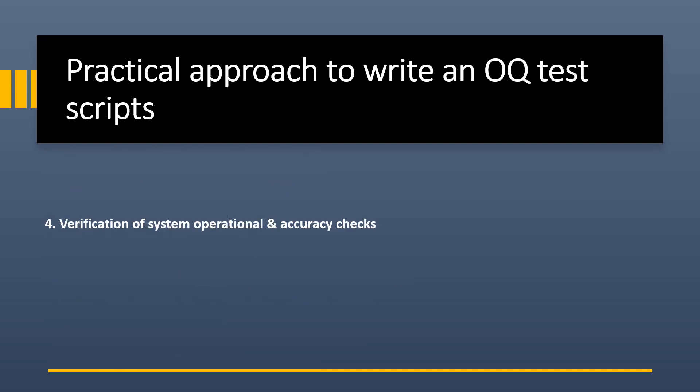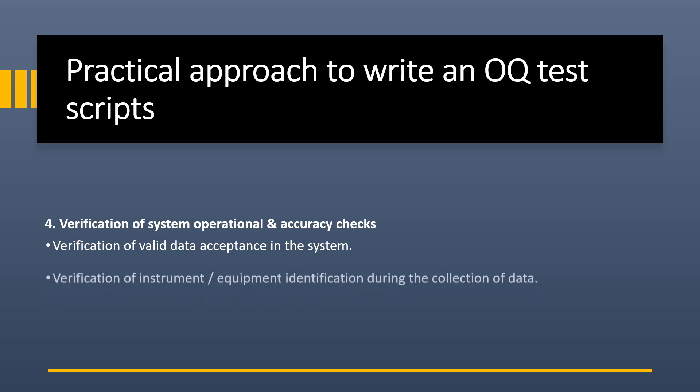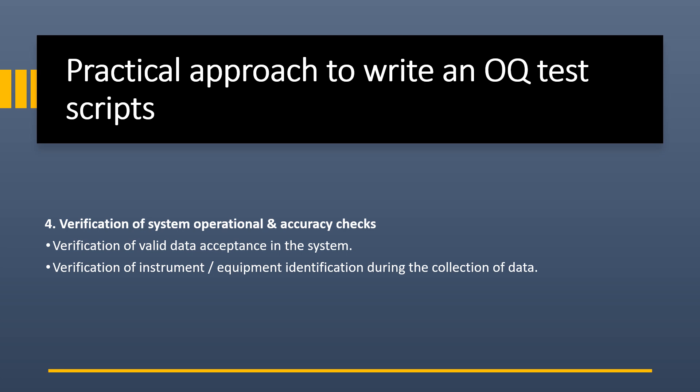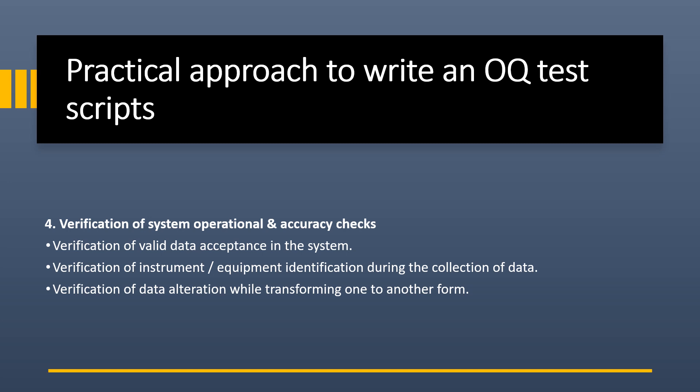Fourth is verification of system operational and accuracy check. This includes verification of valid data acceptance — the system must accept only valid data within acceptance limits. Next is verification of instrument or equipment identification during data collection — the system must capture instrument ID details in raw data and reflect them in the electronic report. Next is verification of data alteration during transfer — data transferred from raw format to report format must remain unchanged.